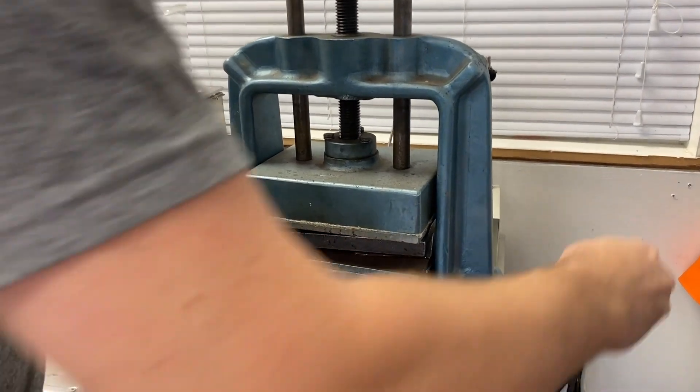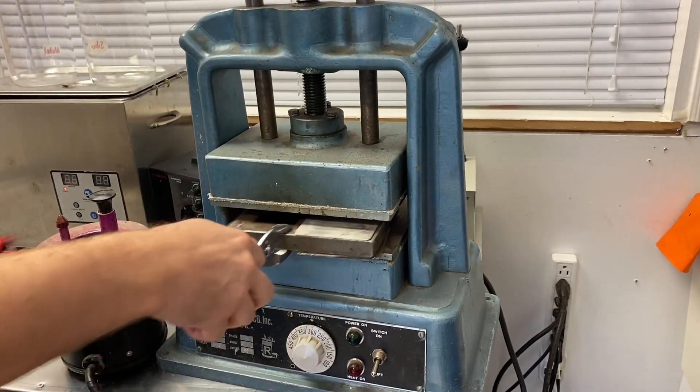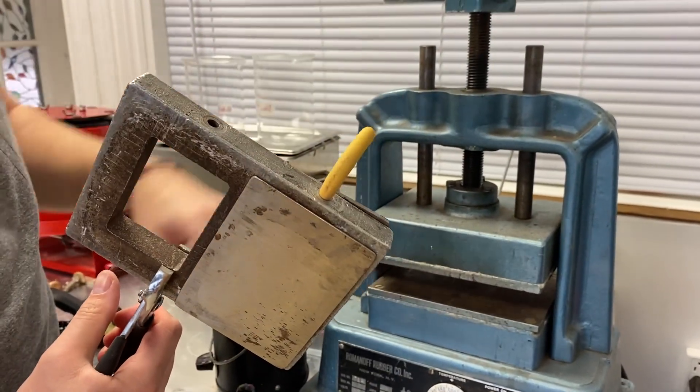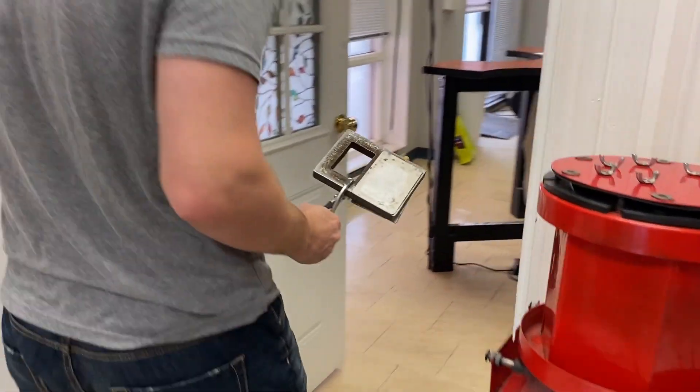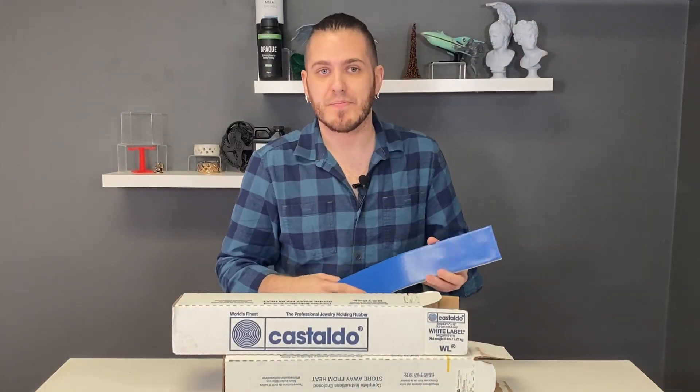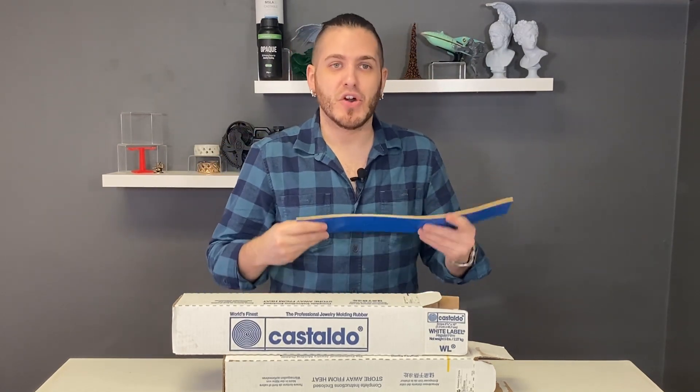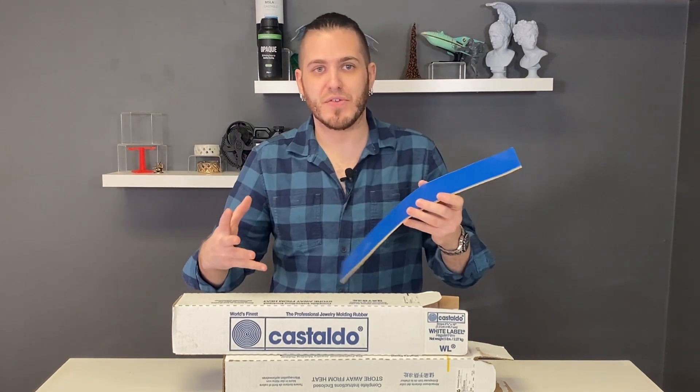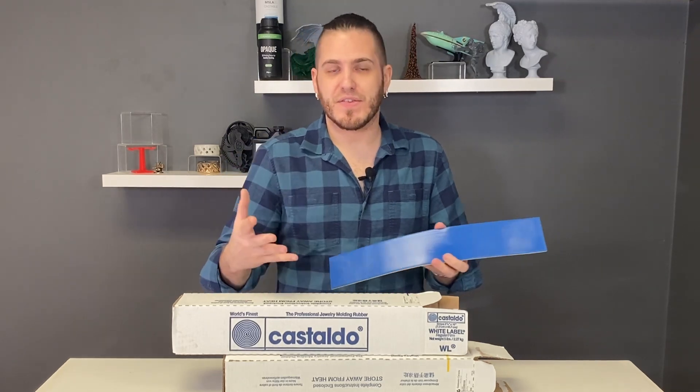Because in this machine here, this is called a vulcanizer, the pressures that are exerted on the rubber are very high using this big screw on the top. The vulcanizer heats from the top and the bottom plates and basically cooks the rubber. The rubber expands, fills in all those gaps, bonds together permanently and becomes a mold.